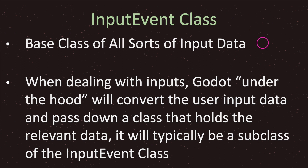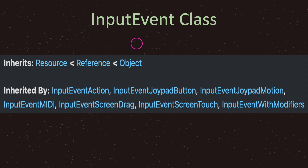For example, when a user presses a button you may want to act upon that. The Godot engine provides you with the InputEvent class, which has subclasses. Depending on the user input, Godot will pass you a very specific subclass that inherits from InputEvent. You may want to use a specific type of user input for your game to work.